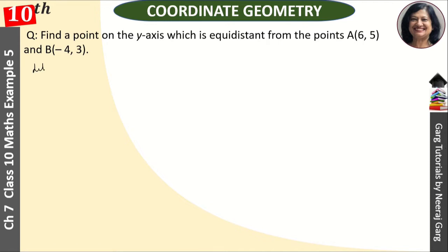First of all, let point on y-axis be P = (0, y). We know that on the y-axis, x-coordinate equals 0. A is given and B is given. Now, P is equidistant, which means PA is equal to PB.